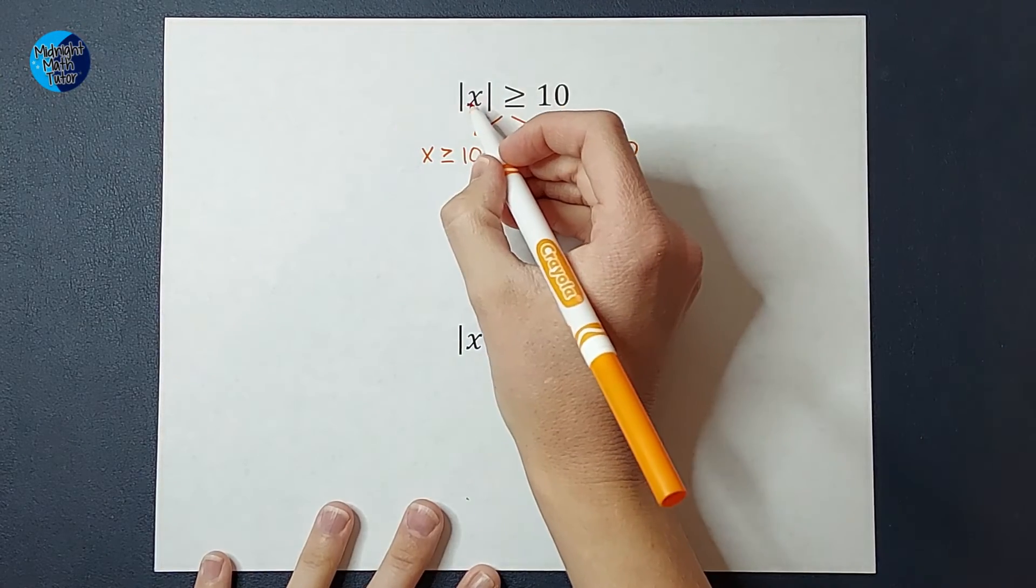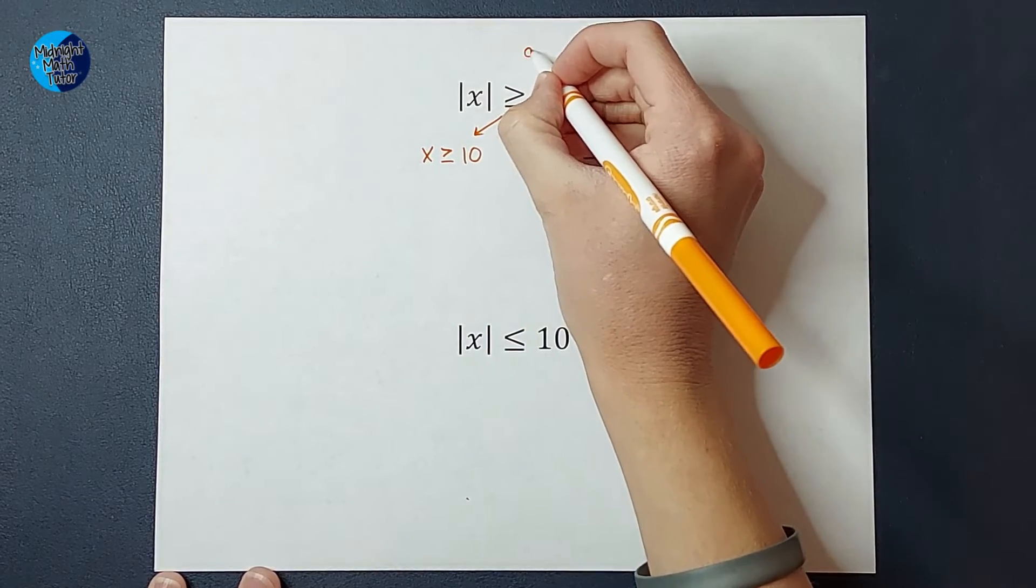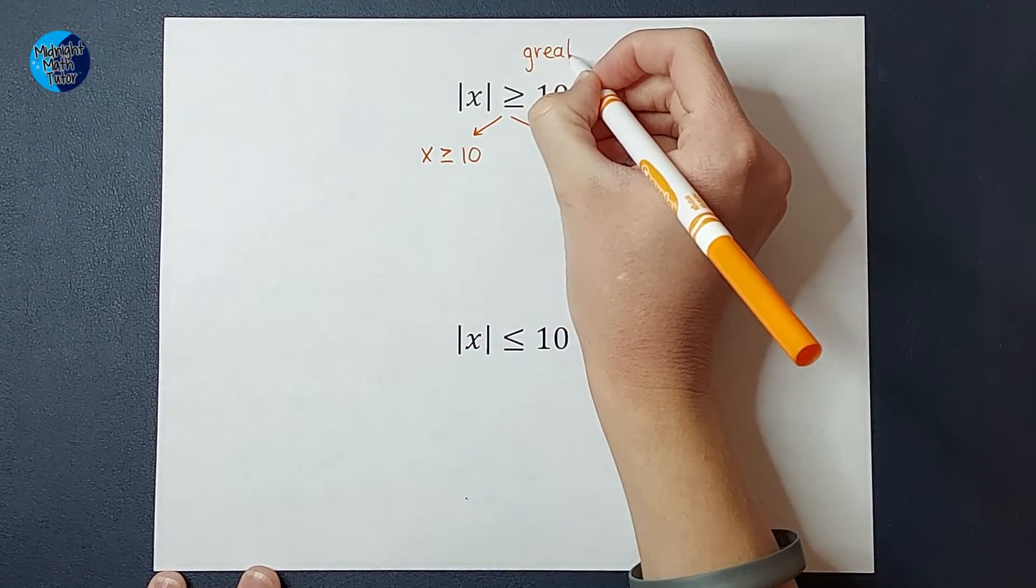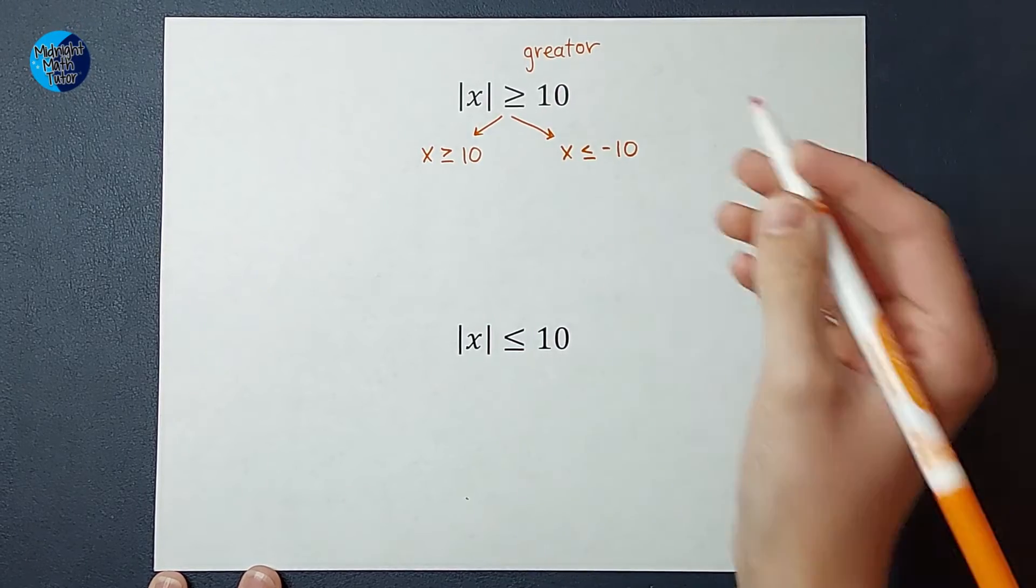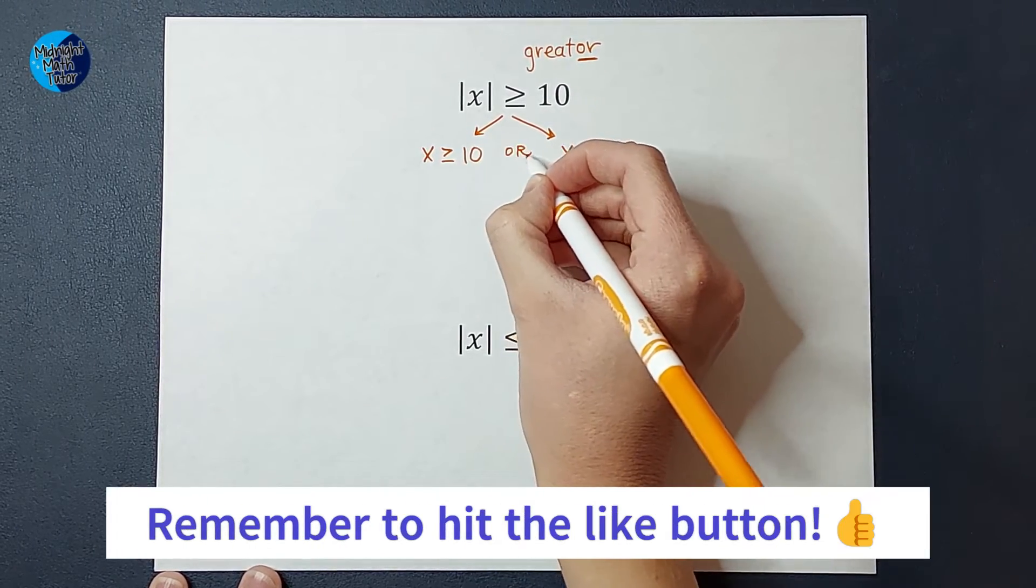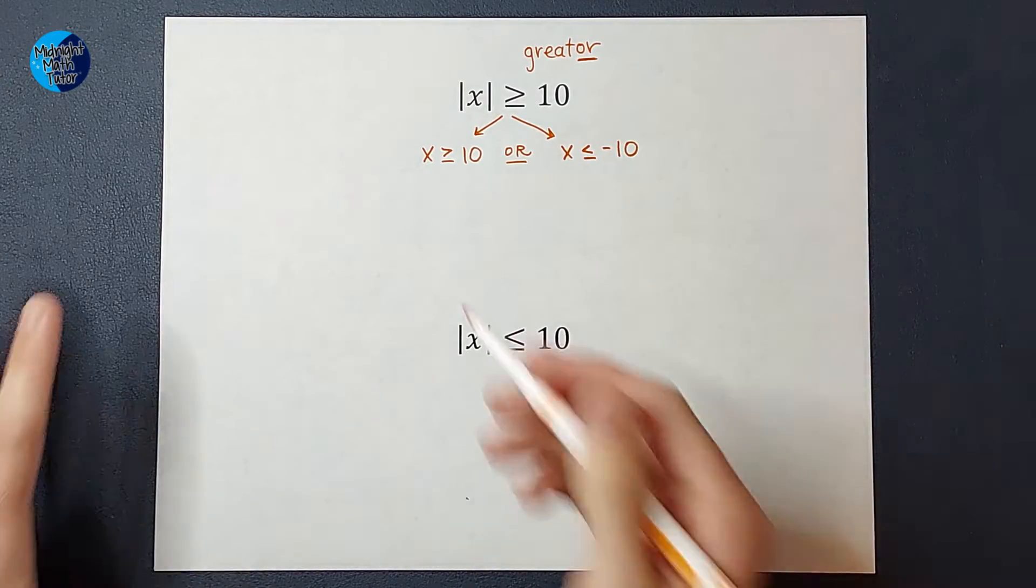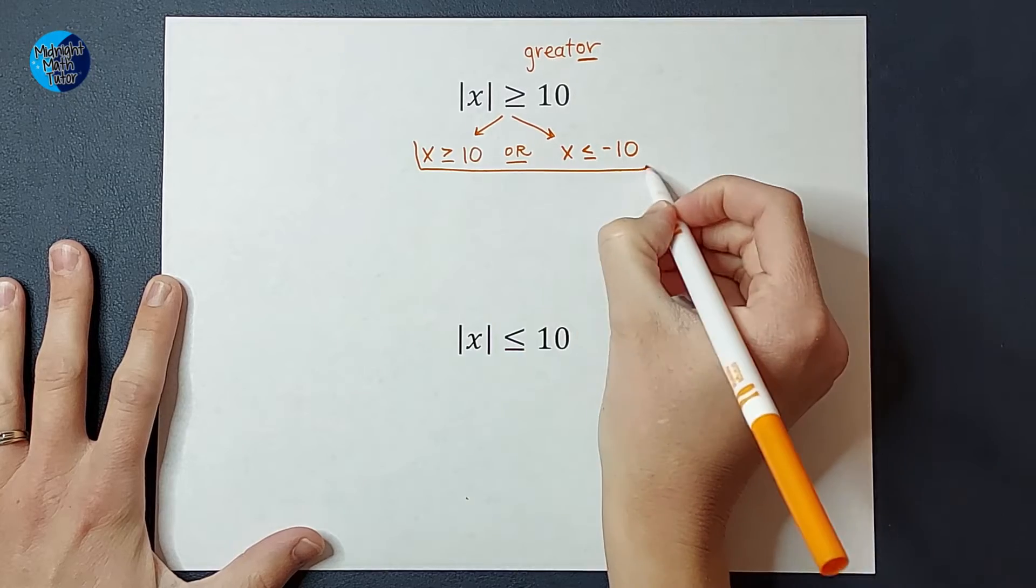And you might even know that when we have the absolute value of X is greater, your teacher may have reminded you, I know this isn't how you spell greater, but greater, that this is an or inequality. So there's my answer, great, but why is that my answer? Why did we split it off into two?